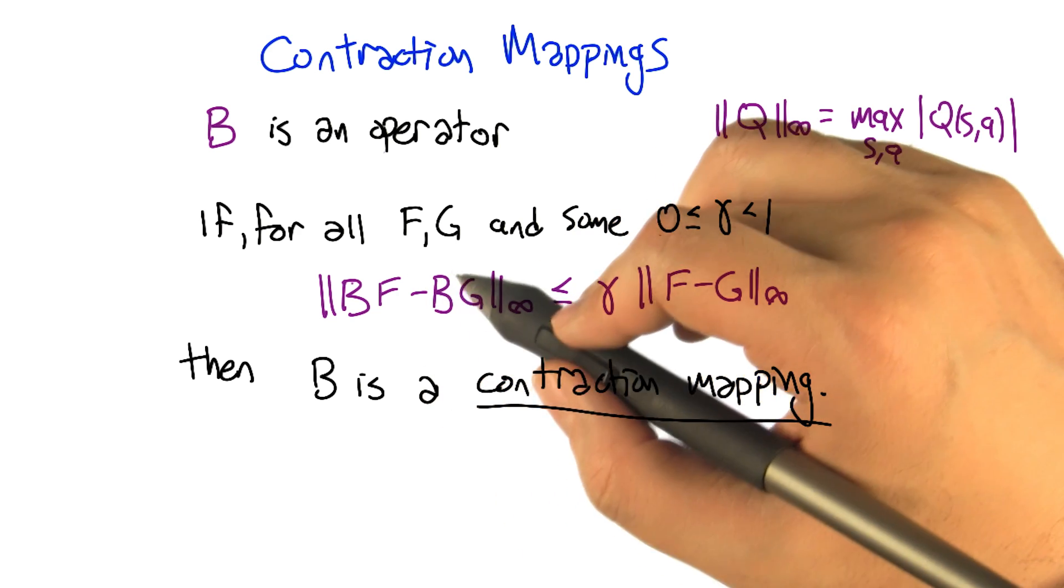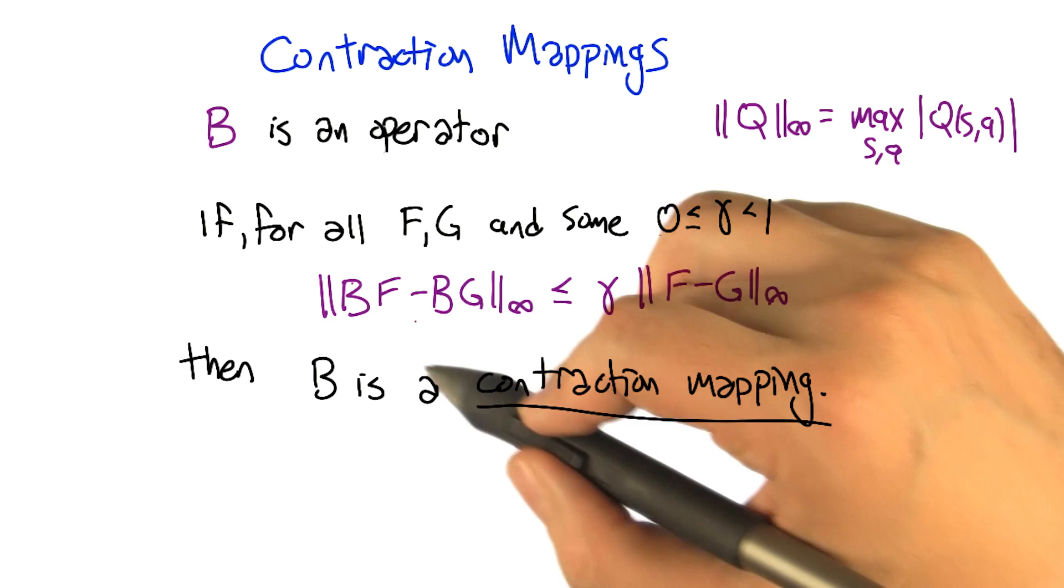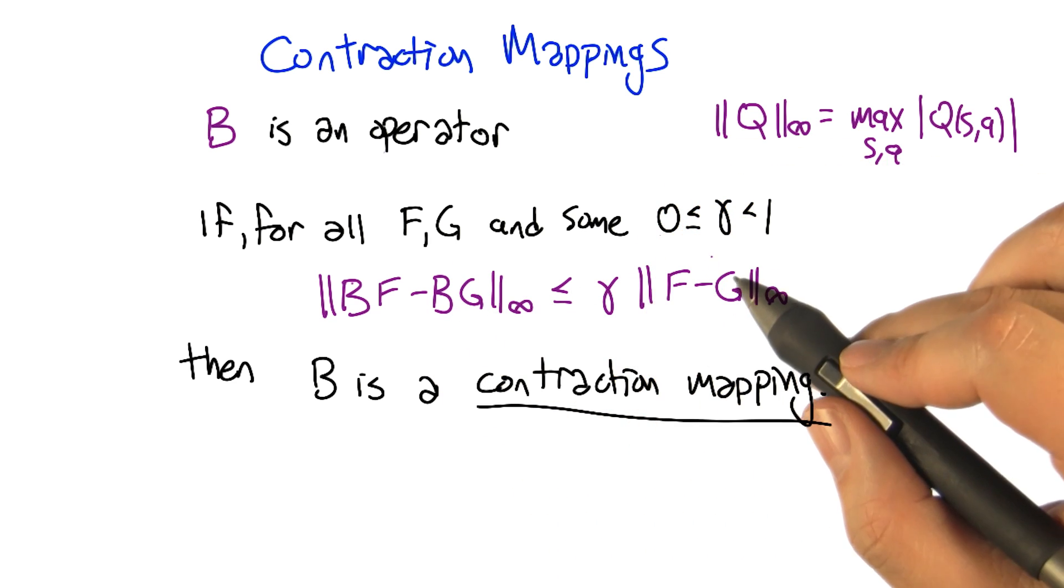And in fact, when we're using B to be kind of like a value iteration operator, it does tend to move around a lot. So you would expect it to move around a bit, at least as you're going through value space.